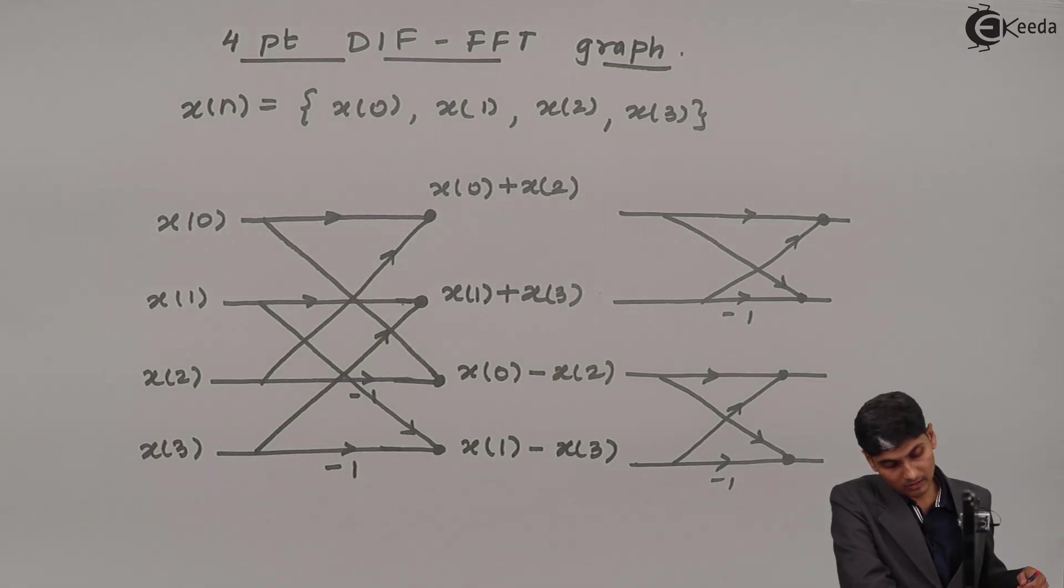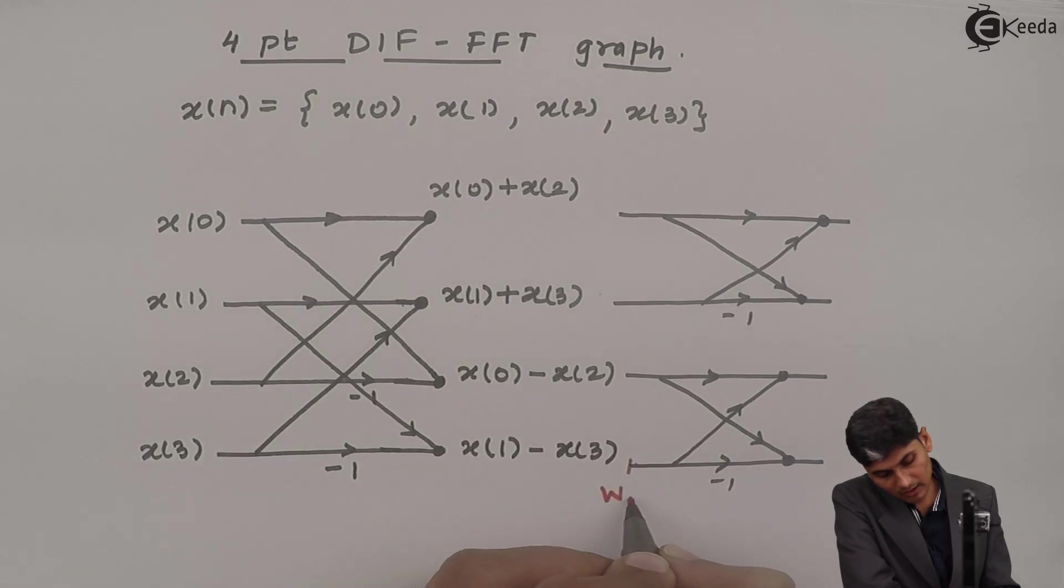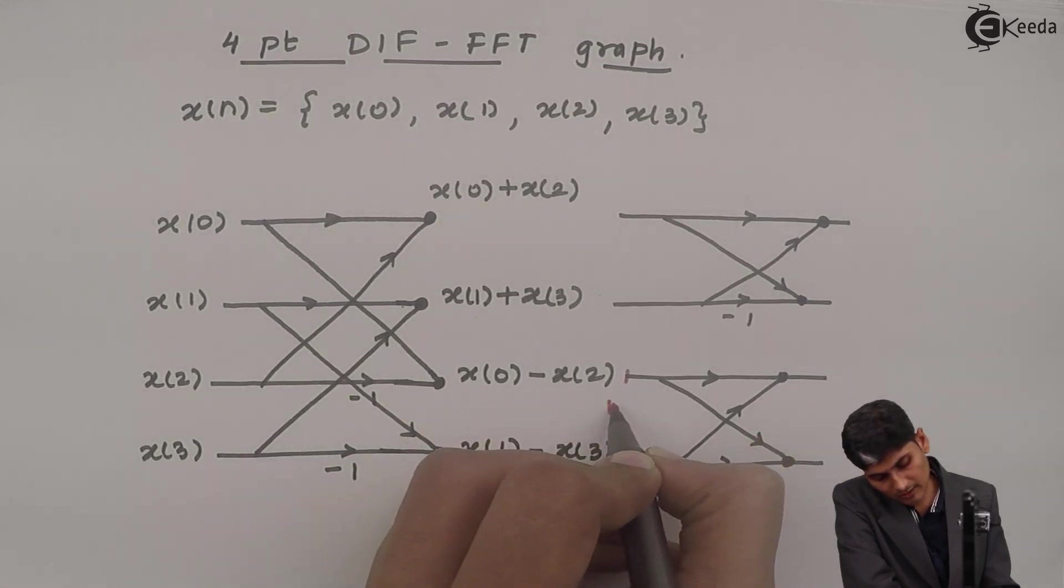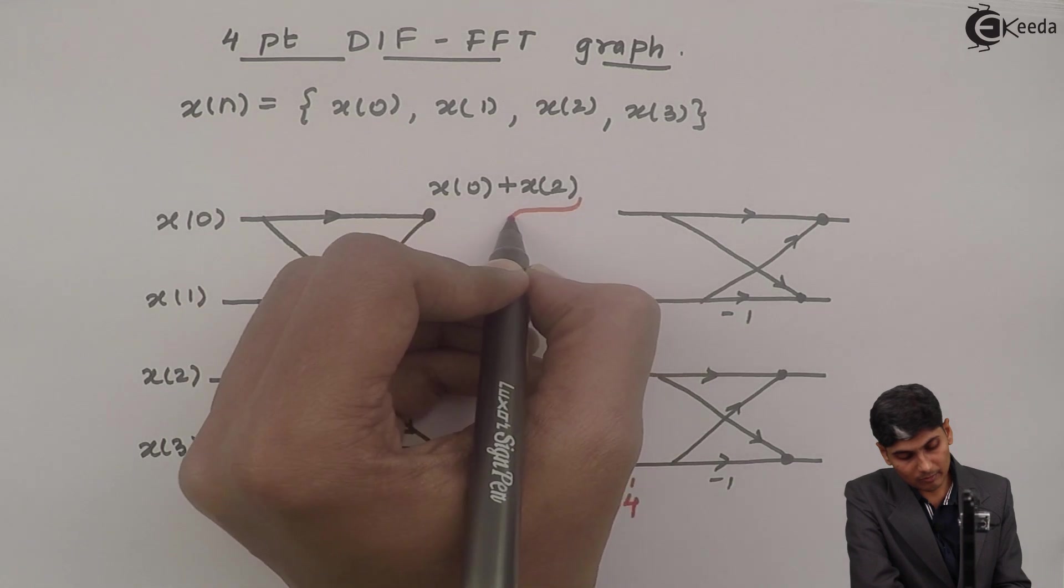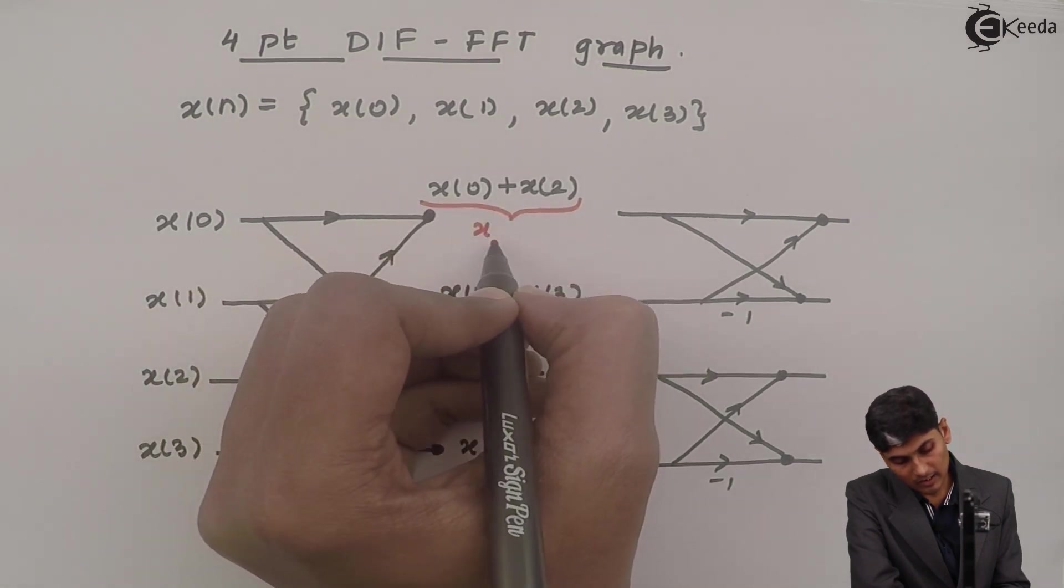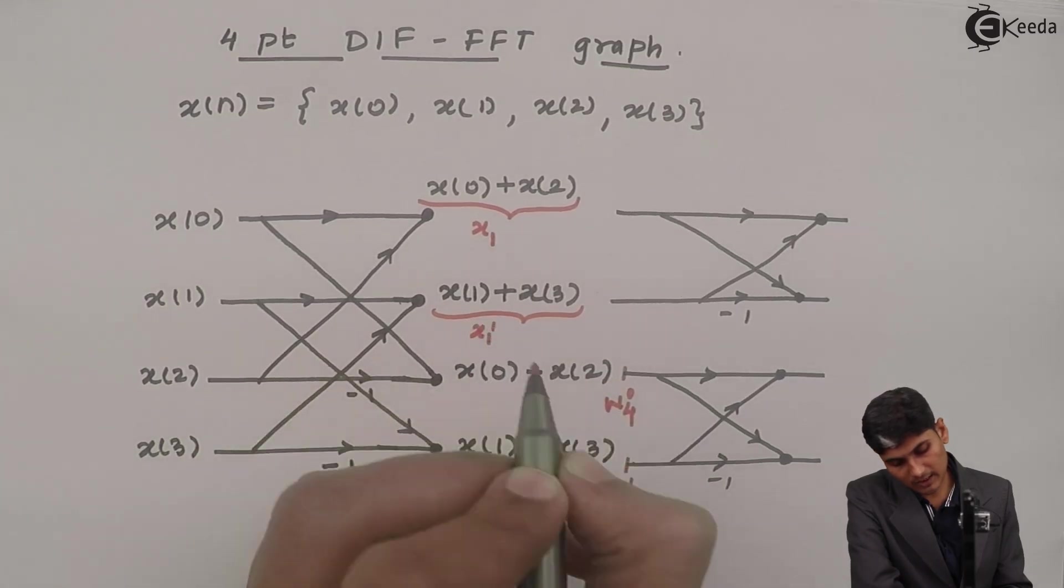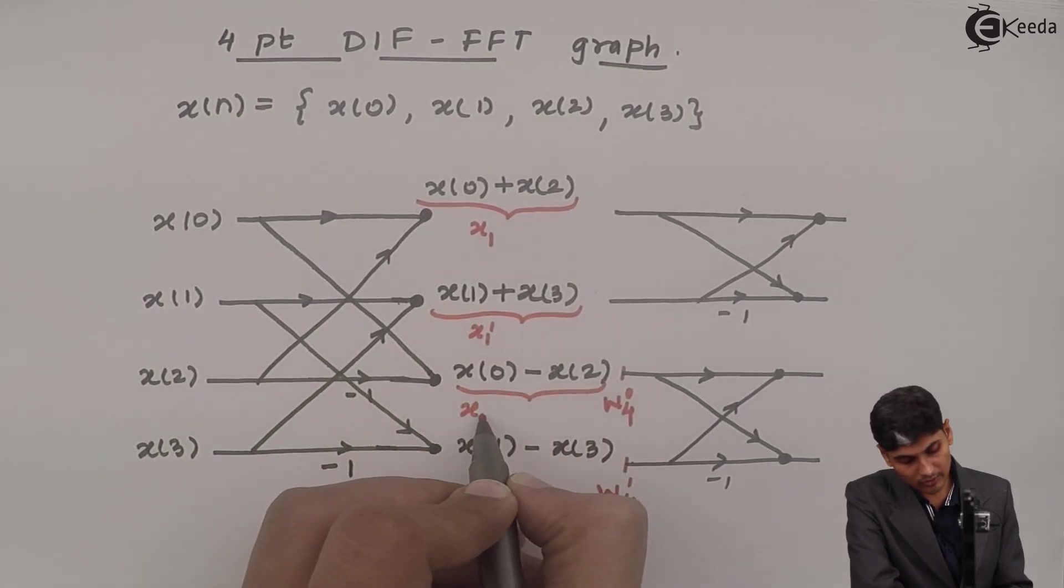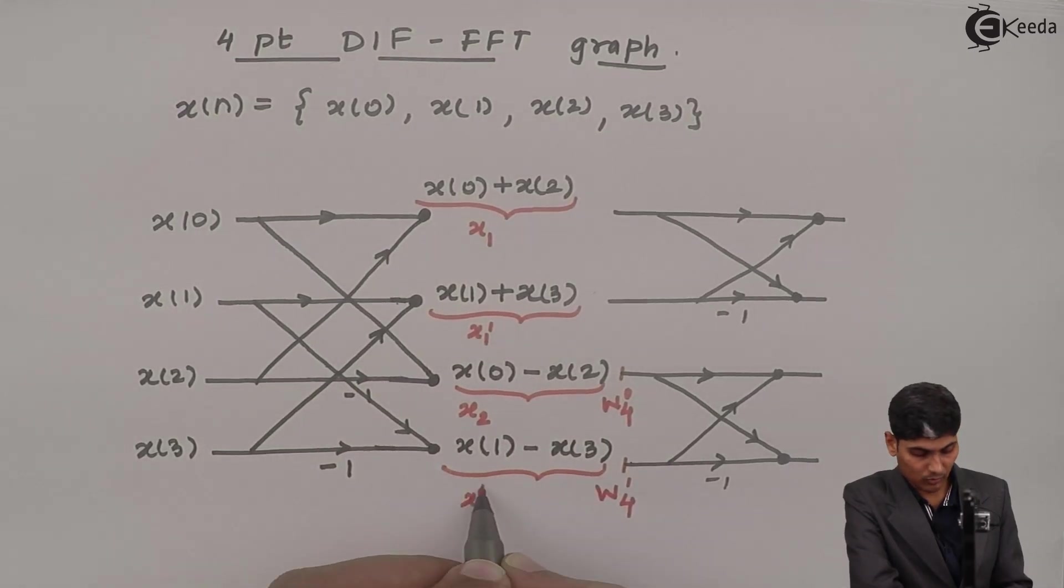Along with it, at this point, I will have a multiplying factor of W4 raised to 1. And here I will have W4 raised to 0, which is nothing but 1. So let us call this sample as x1, this as x1 dash, this will be x2 and this will be x2 dash.